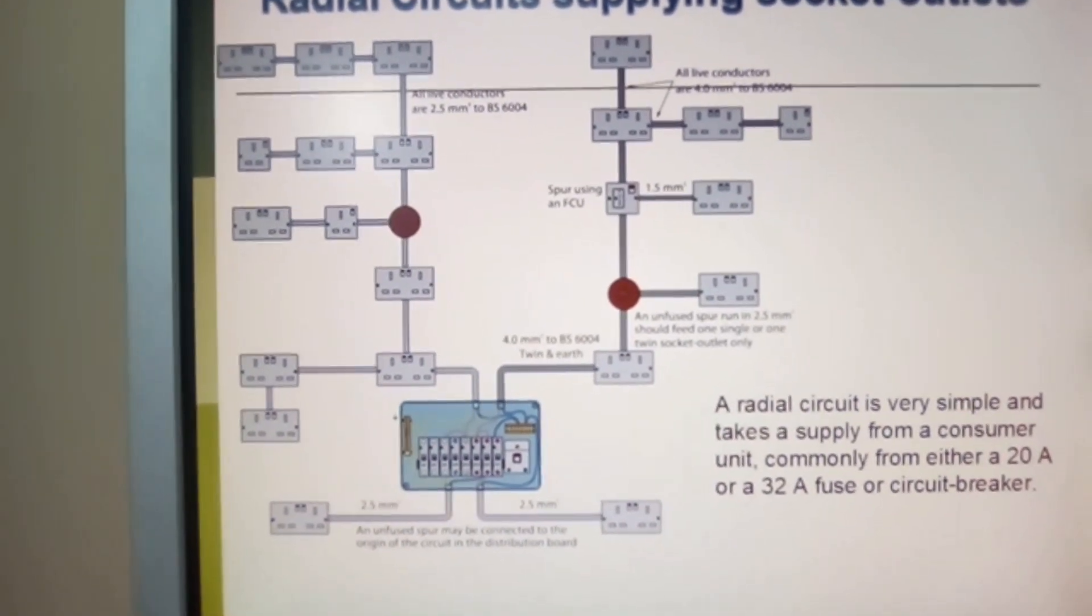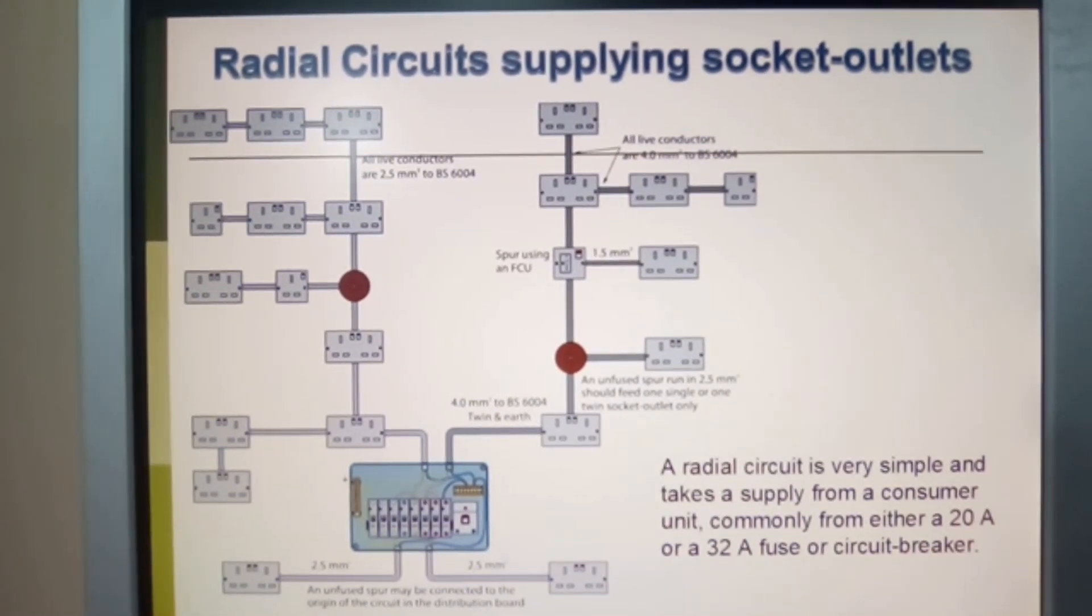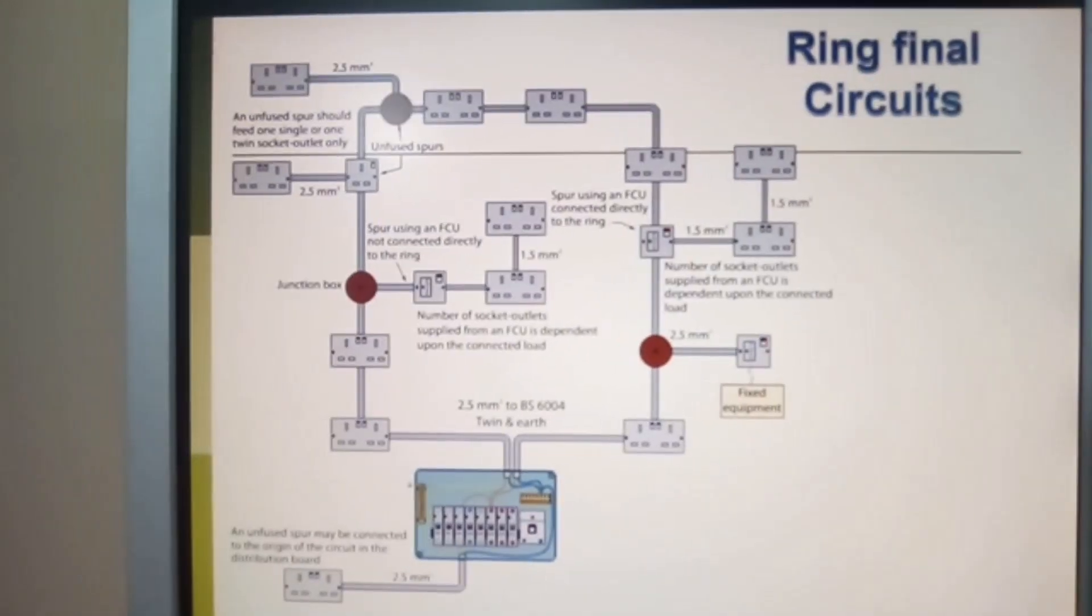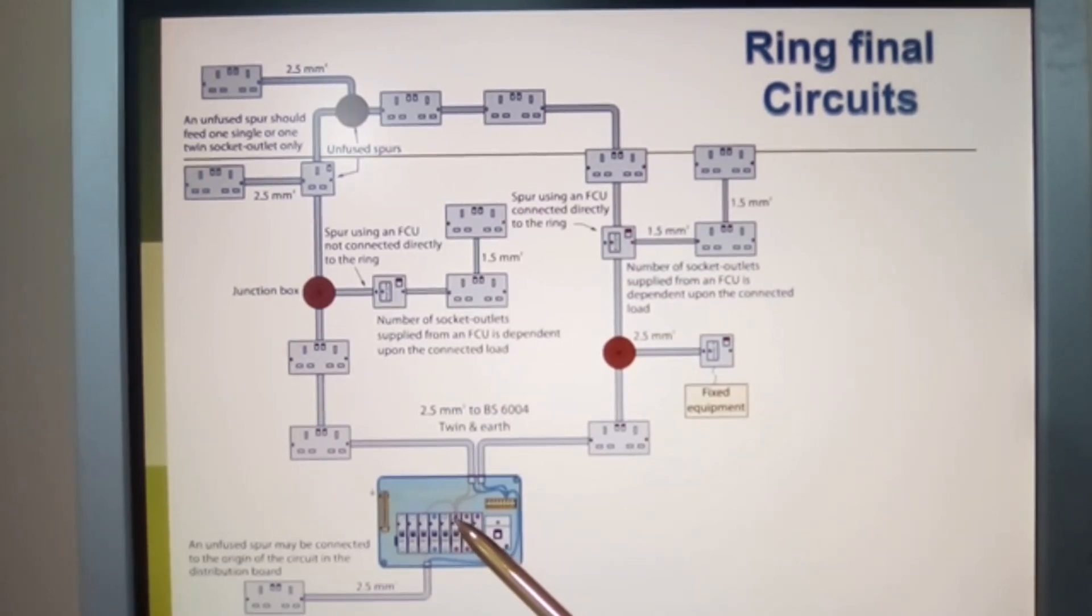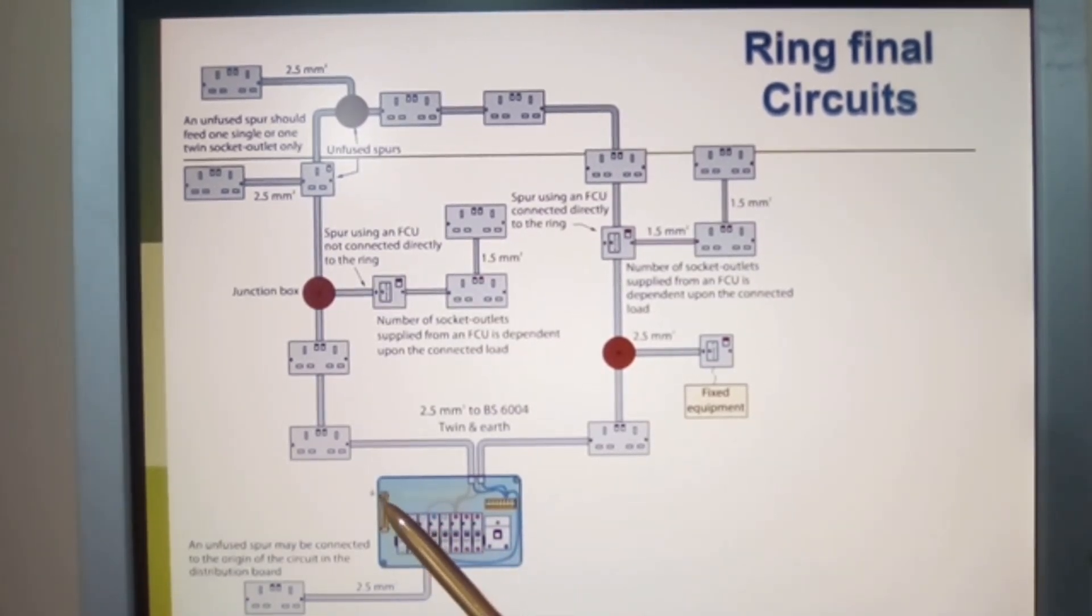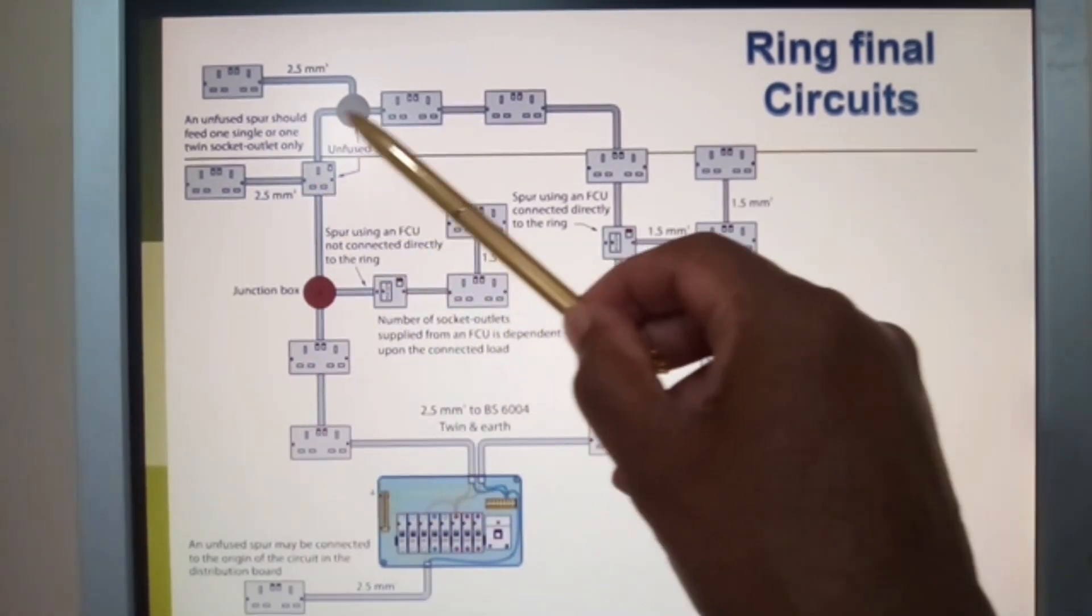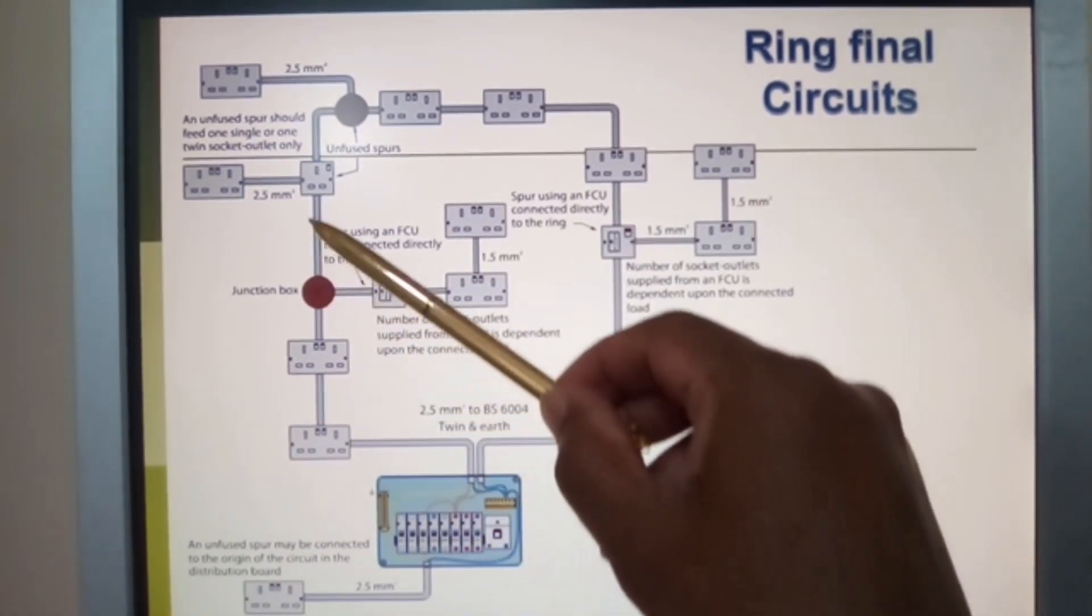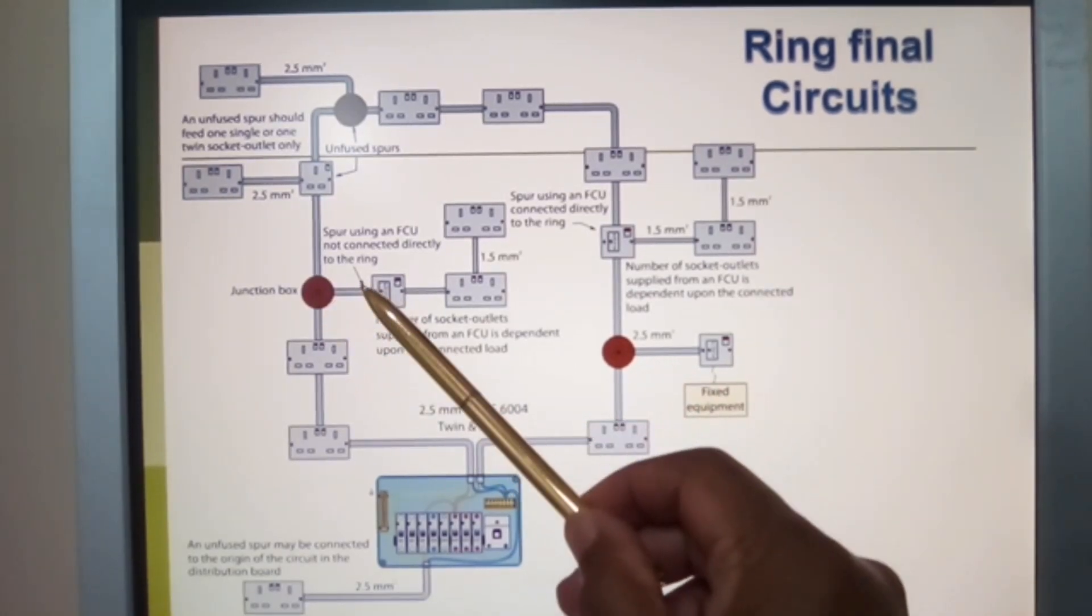Here we have a ring final circuit. Both the live conductors will come from the same point of the fuse or circuit breaker. The neutral should be in the same terminal, the earth conductor should be in the same terminal. You've got a feed going round and coming back to the same point. It's just been interrupted by these sockets and junction boxes.